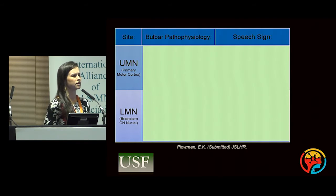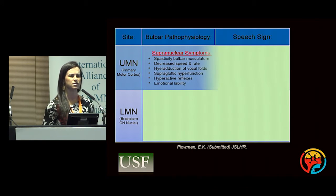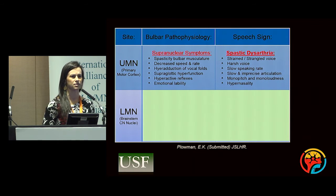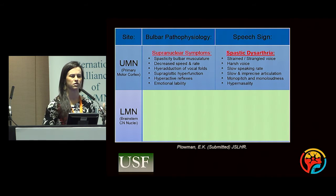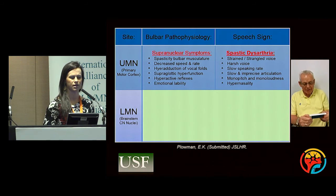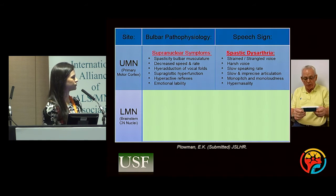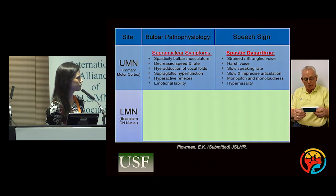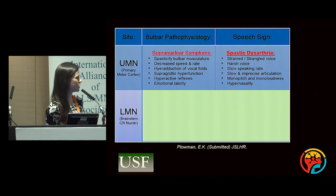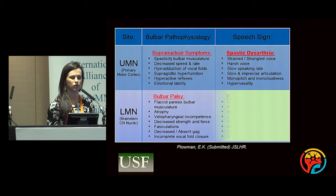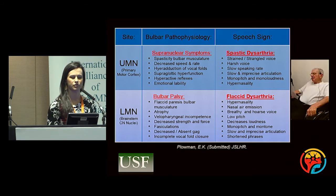When we think about ALS speech, patients will present with a mixed flaccid-spastic dysarthria eventually, but in the beginning the predominant degeneration gives a telltale sign — speech will sound either spastic or flaccid. Here's an example of an individual with a spastic dysarthria with ALS, and then those presenting more predominantly with lower motor neuron involvement and a flaccid dysarthria might sound like this.